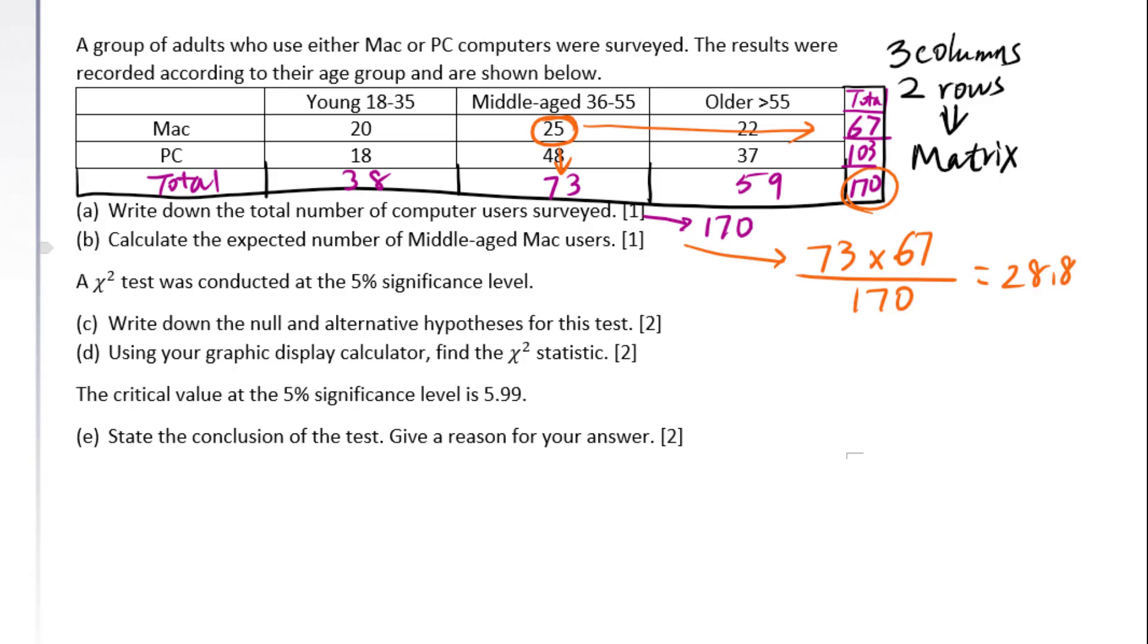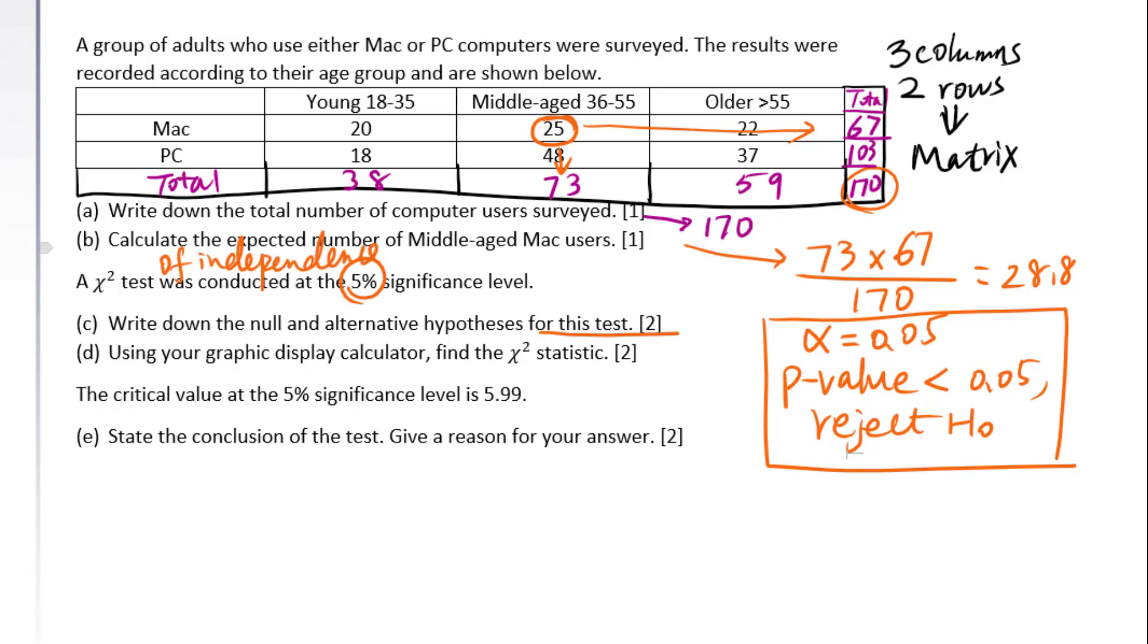A chi-square test was conducted at the 5% significance level which means alpha equals 0.05. When p-value less than 0.05 reject H0. Write down the null and alternative hypothesis for this test. A chi-square test means chi-square test of independence is to check whether the data are independent of each other.